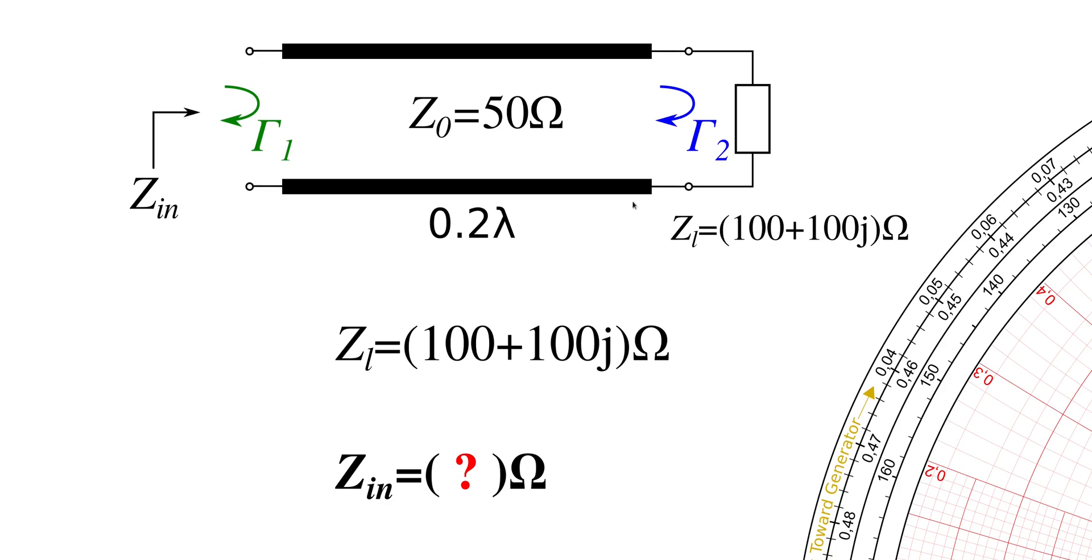We have a transmission line with 50 ohms impedance and a line length of 0.2 lambda. The line is loaded with a complex impedance of 100 plus 100j ohms. When we do that, we can determine the input impedance of the line, which is the impedance measured between these two pins here, the so-called Z_in input impedance.